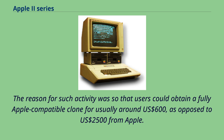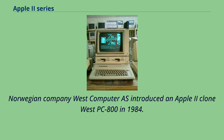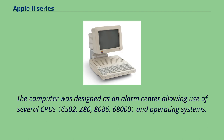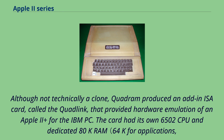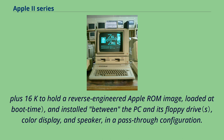Norwegian company West Computer introduced an Apple II clone, the West PC800, in 1984, designed as an alarm center allowing use of several CPUs and operating systems. Quadram produced an add-in ISA card called the QuadLink that provided hardware emulation of an Apple II Plus for the IBM PC. The card had its own 6502 CPU and dedicated 80K RAM — 64K for applications plus 16K to hold a reverse-engineered Apple ROM image — and was installed between the PC and its floppy drive, color display, and speaker in a pass-through configuration, allowing the PC to operate in a dual-boot fashion and run the majority of Apple II software.